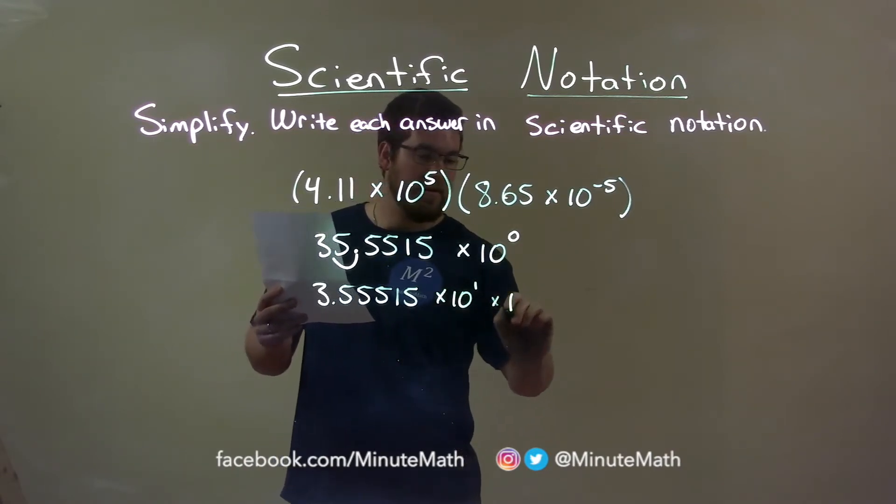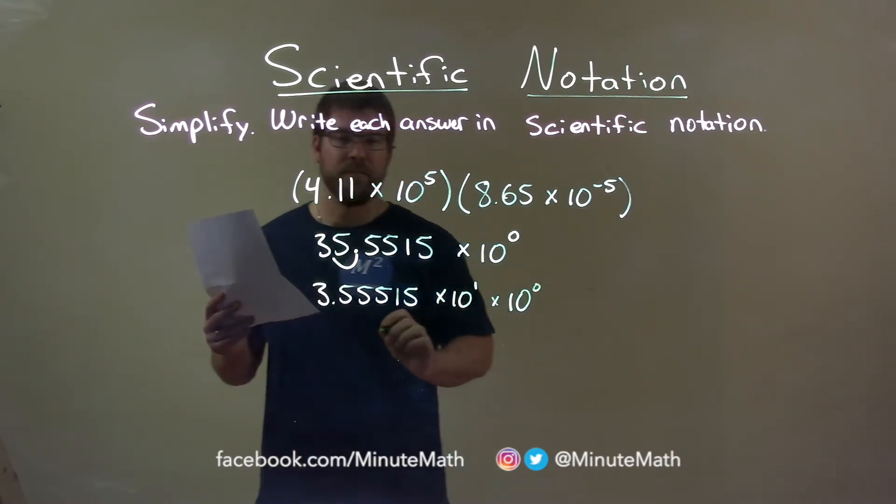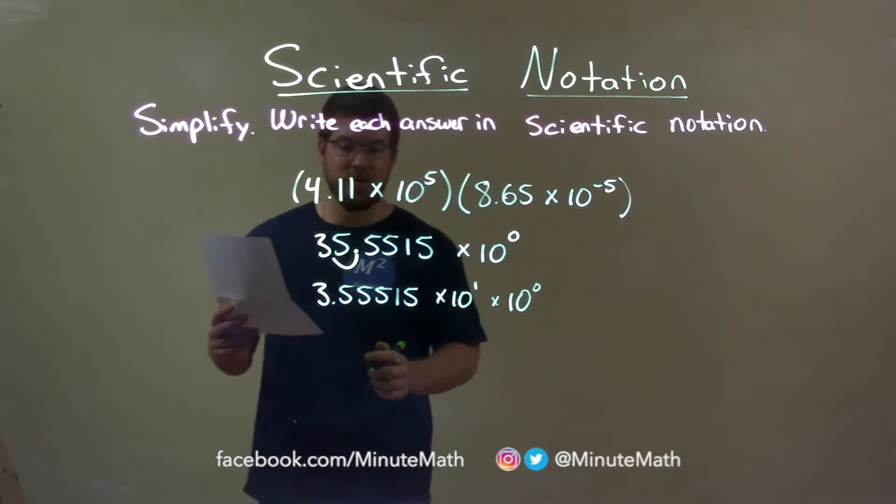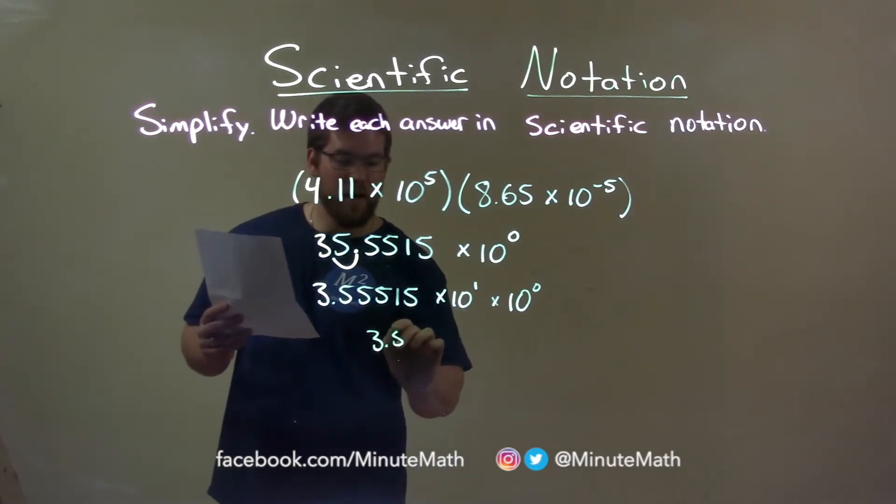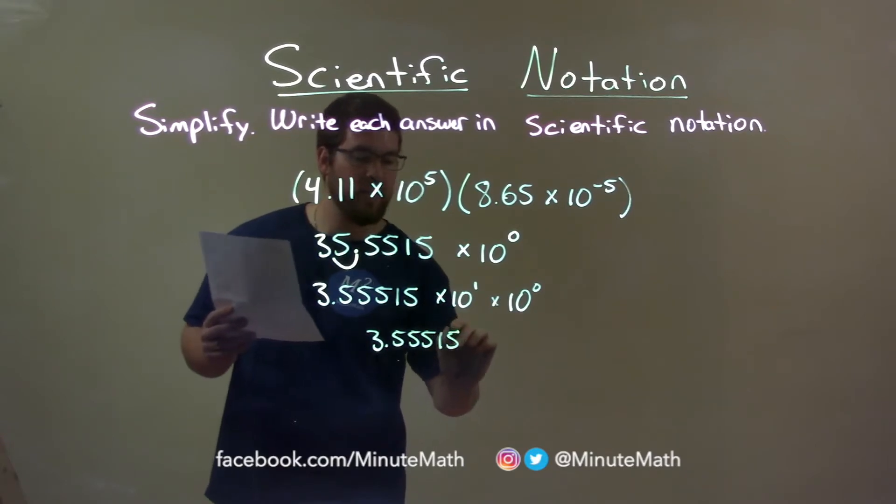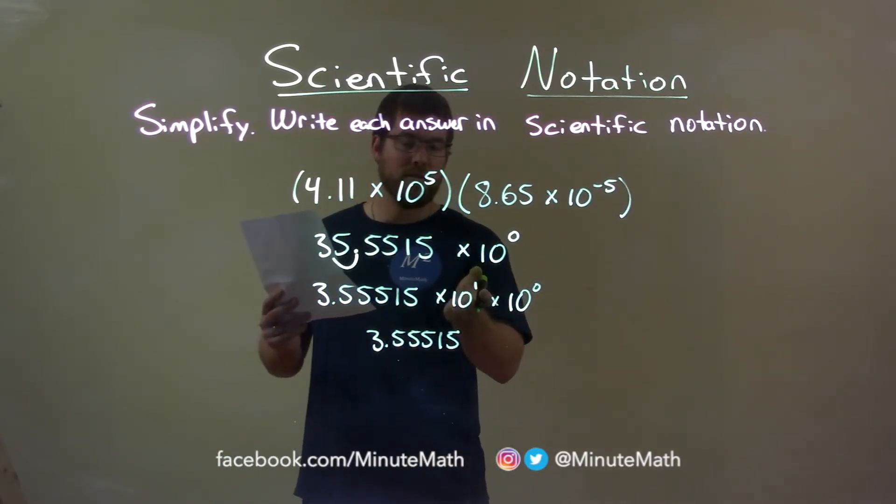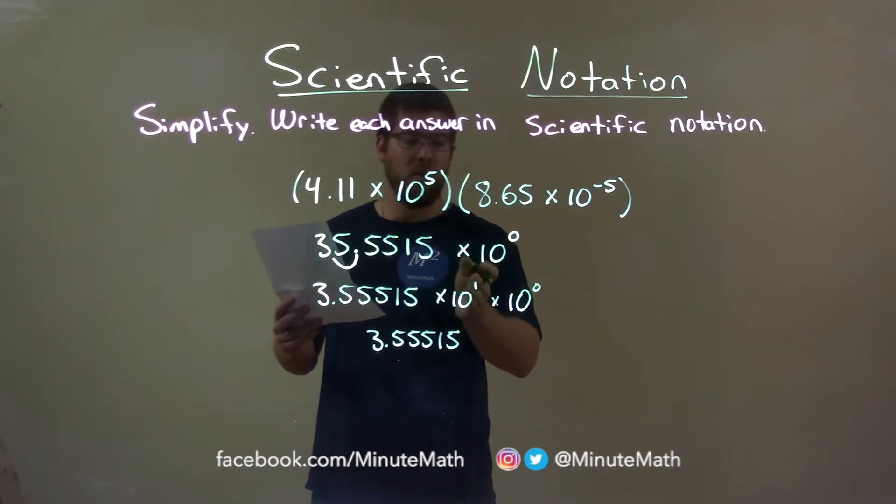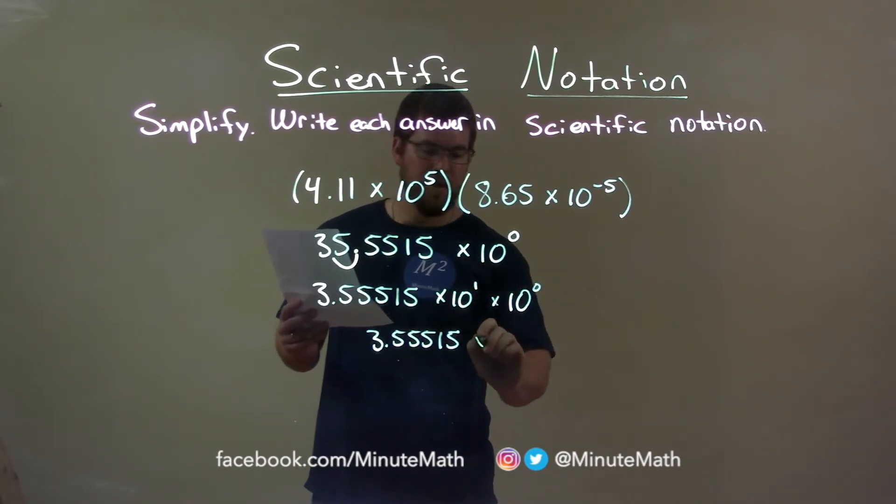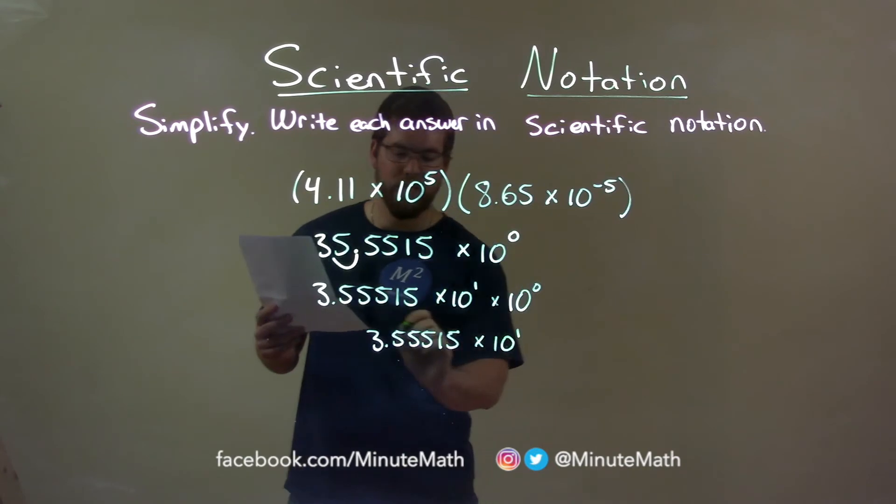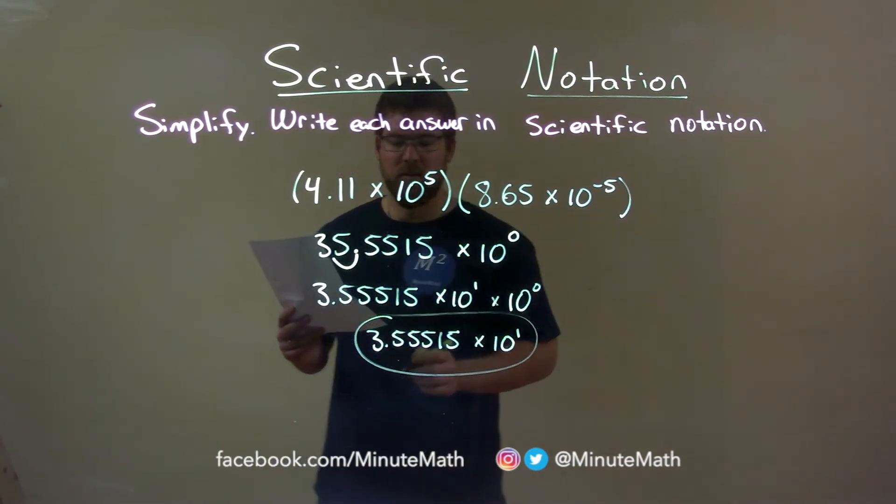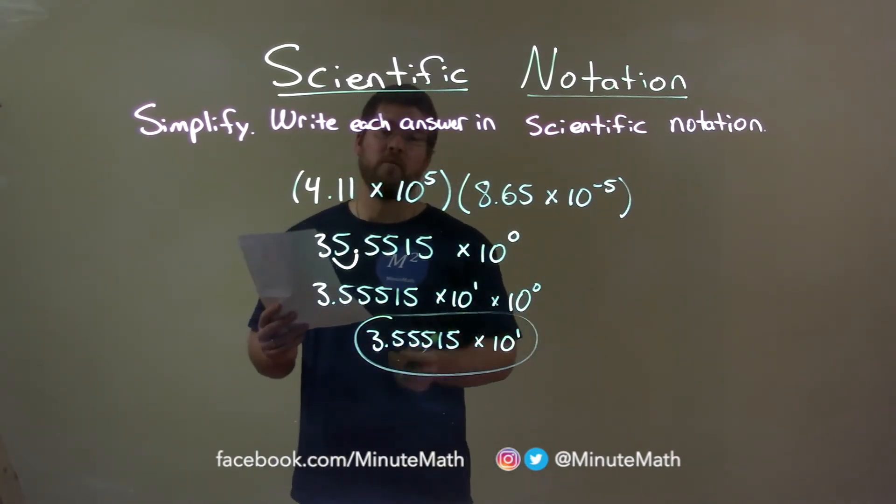Bring down 10 to the 0 power. Now let's do our final simplification. 3.55515 is right there. We have to multiply the 10's. Same base, add the exponents: 1 plus 0 is 1. So my final answer is 3.55515 times 10 to the 1st power.